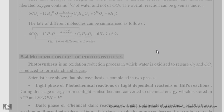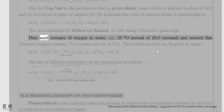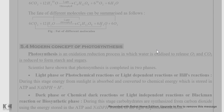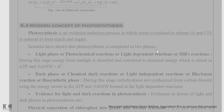This was confirmed by Rubin and Kamen in 1941. Using Chlorella, a green alga, they used isotopes of oxygen in water — H2(18O) instead of normal H2O — and noticed that the liberated oxygen contains 18O from water and not from CO2. The overall reaction shows that O2 released carries the oxygen isotope from water.